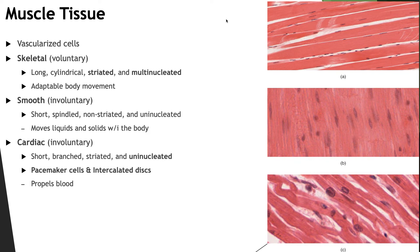Smooth muscle tissue is found throughout the body in the walls of the hollow organs of the digestive tract, the respiratory, urinary, and reproductive tracts, the walls of blood vessels, and the erector pili muscles of the skin. The cells are usually short and spindle shaped. They lack striations and intercalated discs and have only one single nucleus per cell. They demonstrate slow twitches and long contractions. Smooth muscle helps to move food, urine, and reproductive secretions throughout the body, controls the diameter of respiratory passageways, and regulates the diameter of blood vessels.